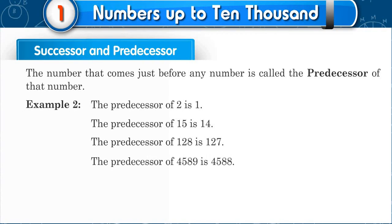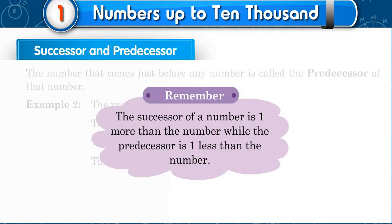The predecessor of 4589 is 4588. Remember, the successor of a number is 1 more than the number, while the predecessor is 1 less than the number.